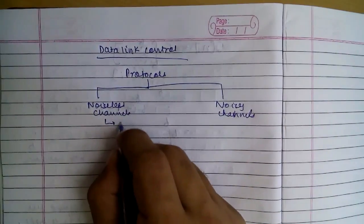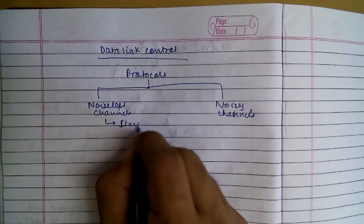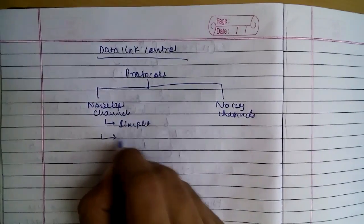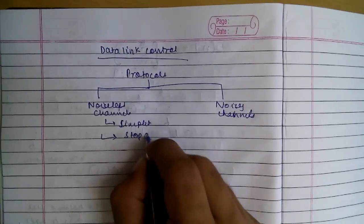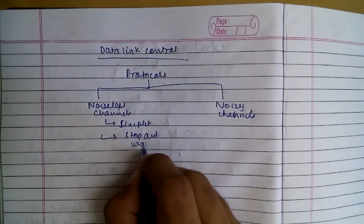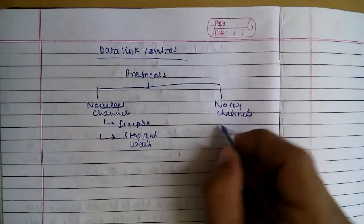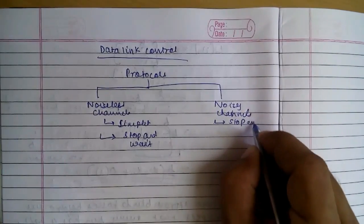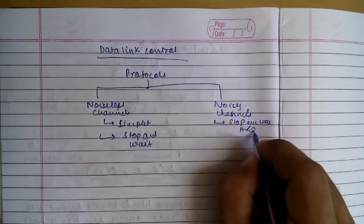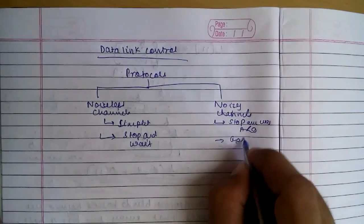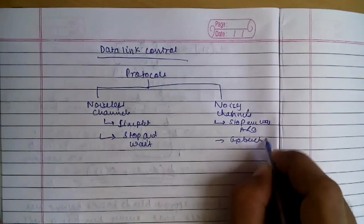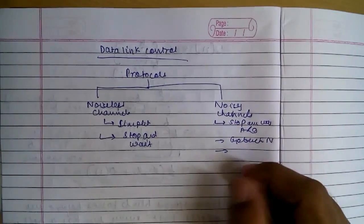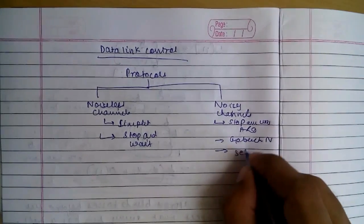In noiseless channels there is simplest and stop and wait, and there are three in noisy: stop and wait ARQ, go back N ARQ, and the third one selective repeat.